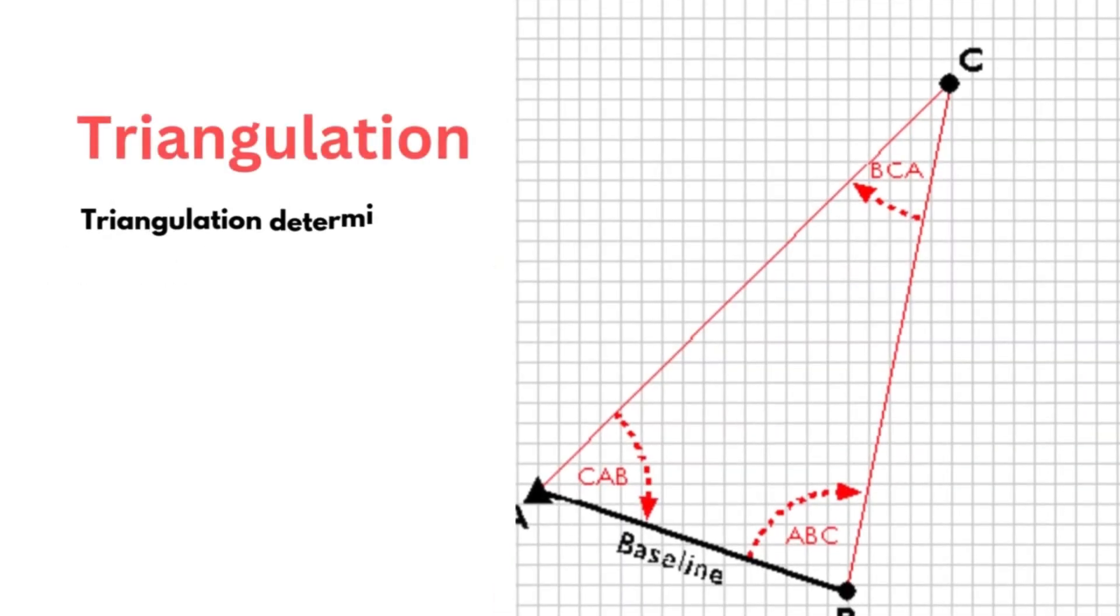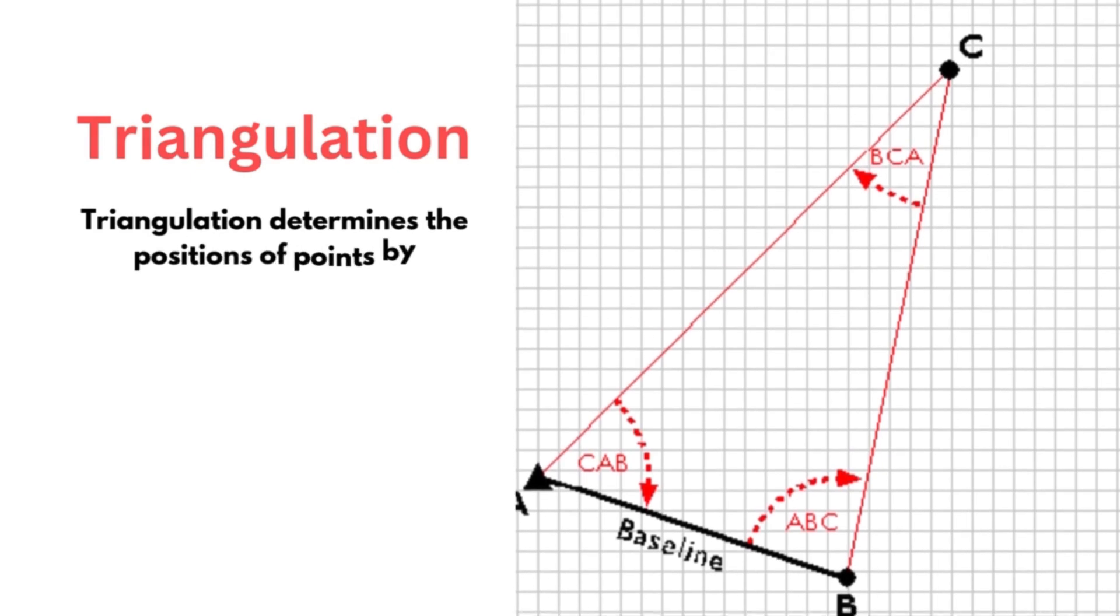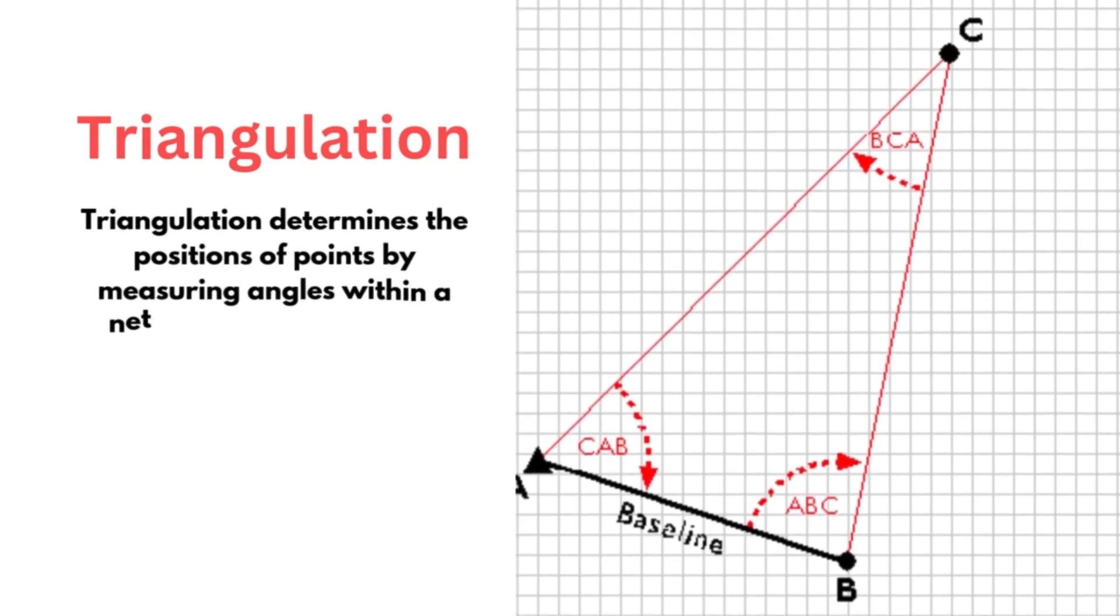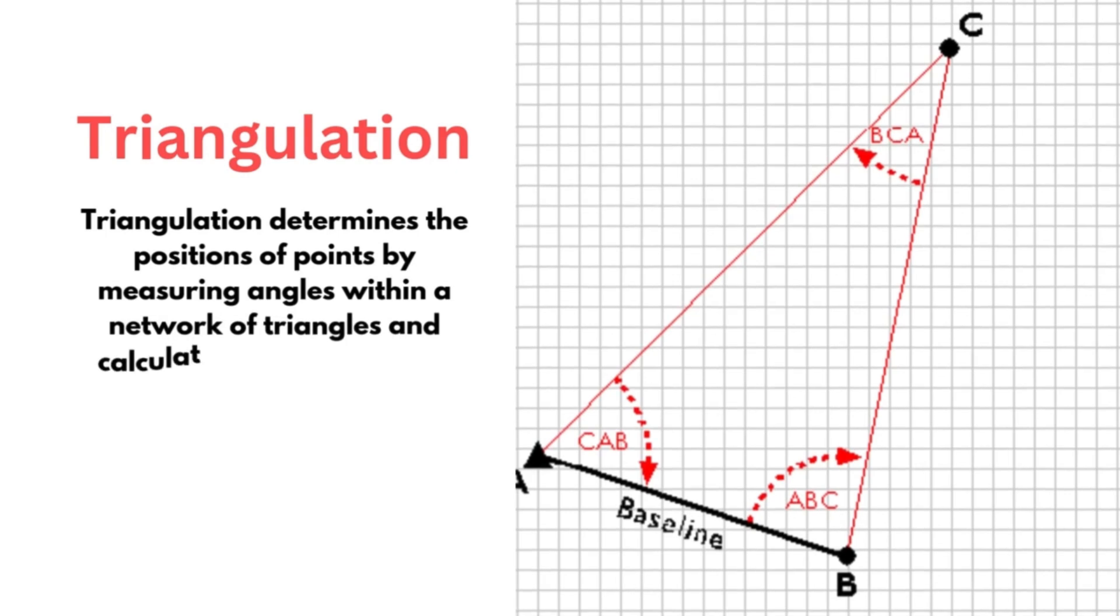If we define triangulation, triangulation determines the positions of points by measuring angles within a network of triangles and calculating distances using trigonometry from a single measured baseline.